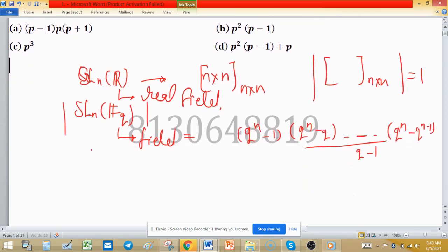This is the general formula for the order of SL_n(F_q). Here we have SL_2, and the field is Z_p. So the order of this one, because we are finding the order of SL_2, means the value of n is 2 here, and p is prime.